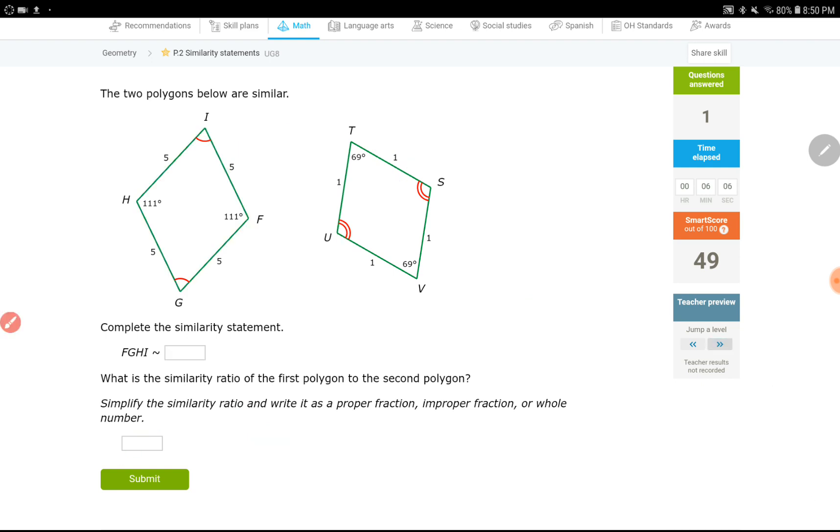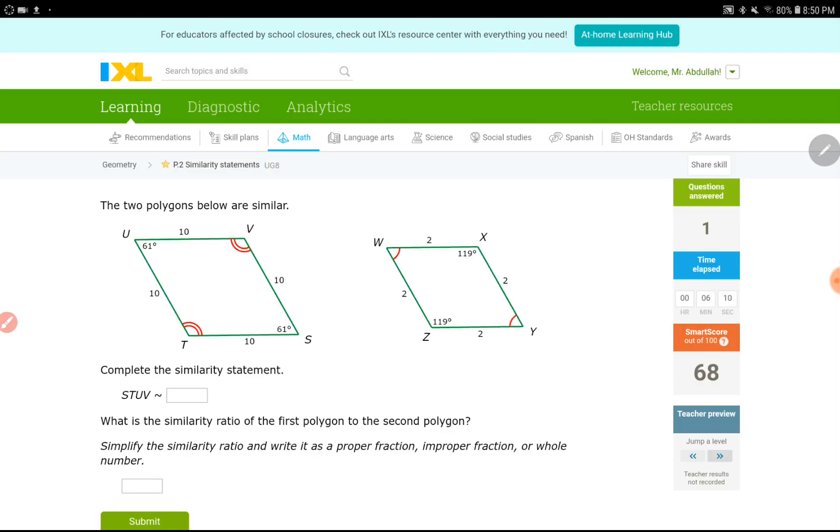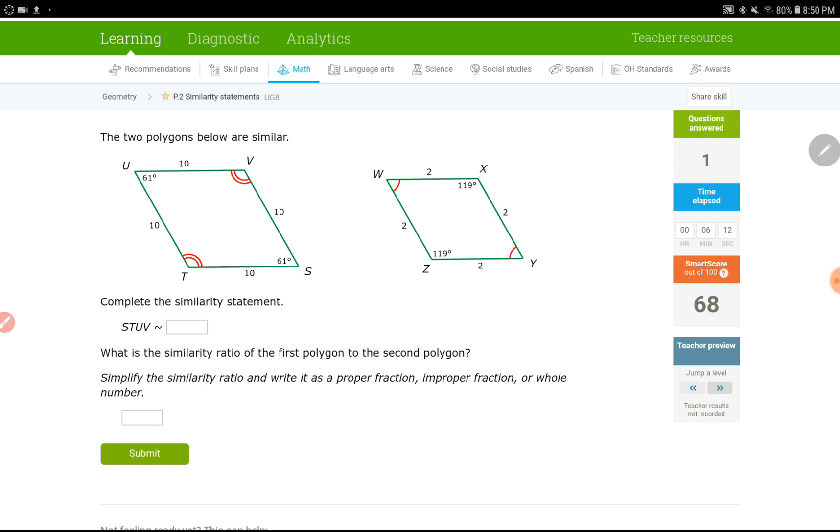Okay, moving on to the next level. This is going to be the last question for this video. Same thing. Complete the similarity statement. All sides are the same. Doesn't matter how you name it. Just find a way. STUV. I'm going to follow the same pattern. S starts from the lower right corner. I will do the same. I'm going to start with this. YZ, W, F, and X.